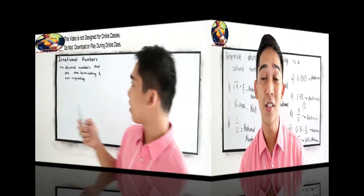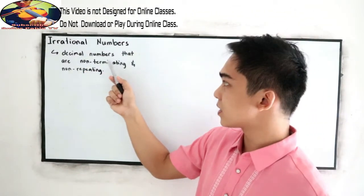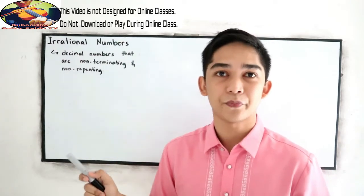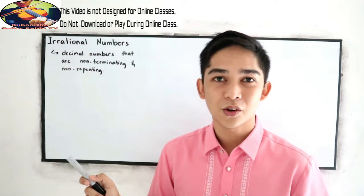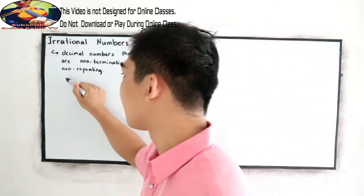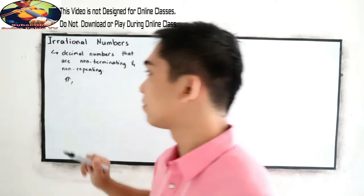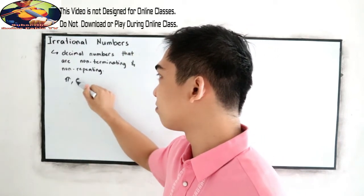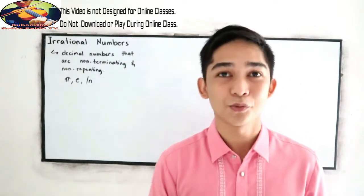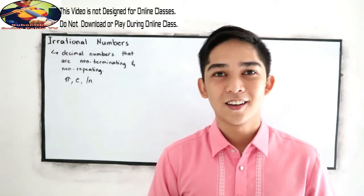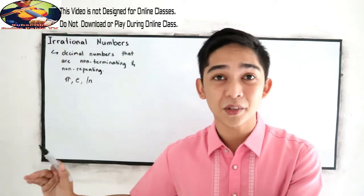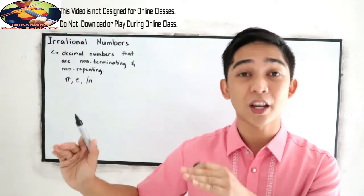Irrational numbers are decimal numbers that are non-repeating and non-terminating. Our famous examples of irrational numbers are pi, the number e, and the natural log in higher mathematics. Now, how are we going to classify whether a number is an irrational number?